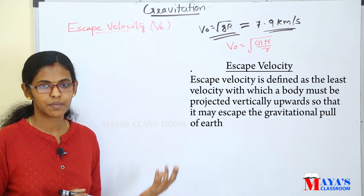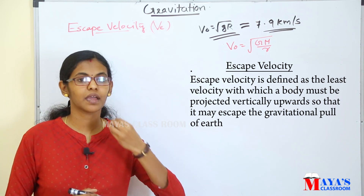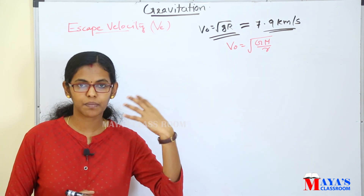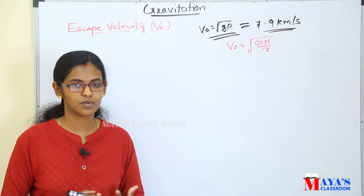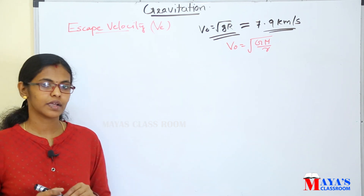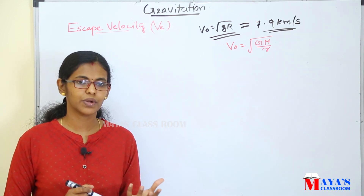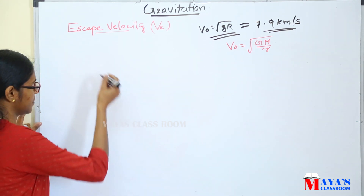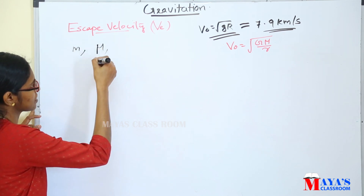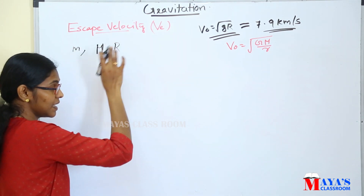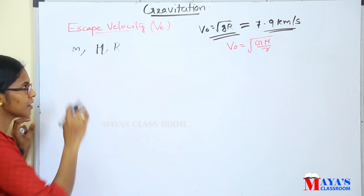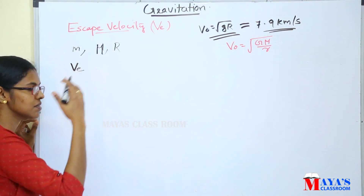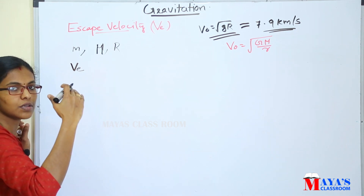We need that minimum velocity to escape from the earth's gravitational field. If we have a body on the surface with sufficient velocity, we can overcome the gravitational field. Now, we consider a body of mass m on the surface of the earth, which has mass M and radius R.